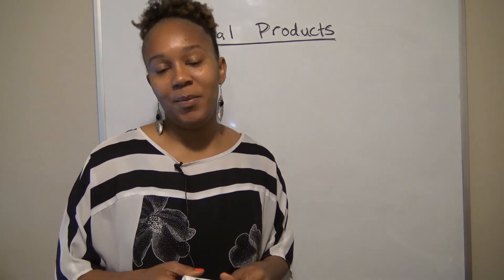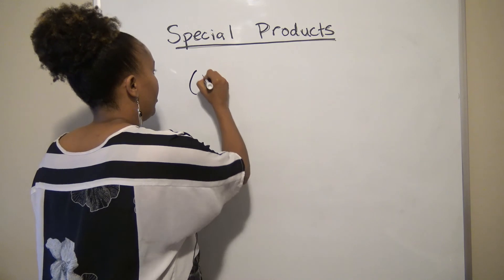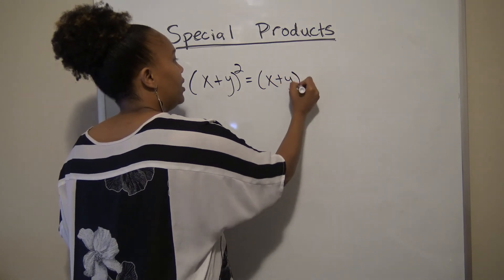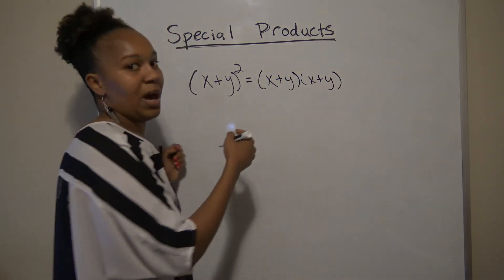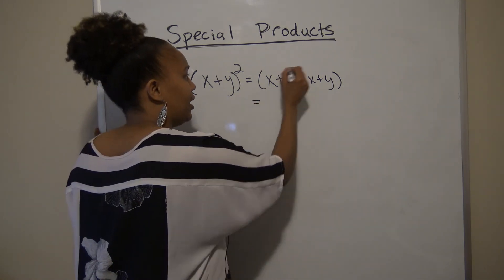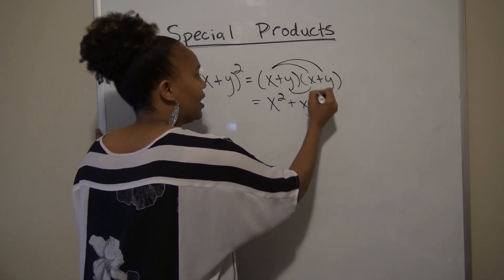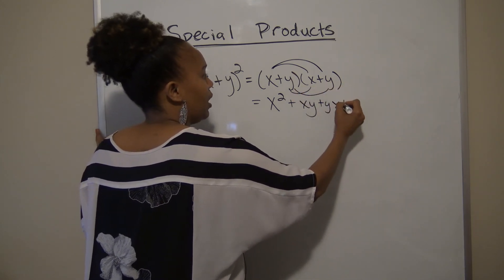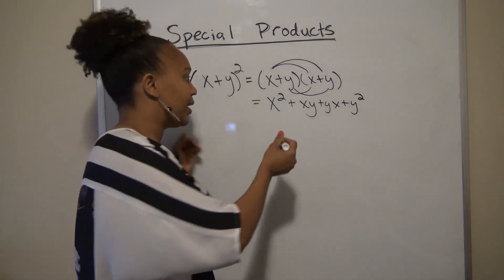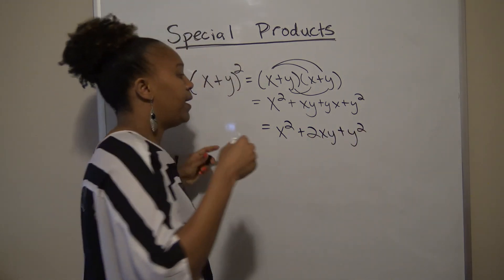Our first special product is the square of a binomial. If we have a binomial and we want to square it, that's the same as saying (x + y)(x + y). When I multiply this out using the FOIL method, I get x times x which is x², x times y which is xy, y times x which is yx, and y times y which is y². Since xy and yx are like terms, I combine them and get x² + 2xy + y².